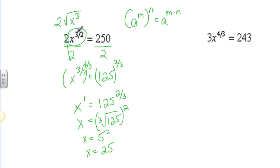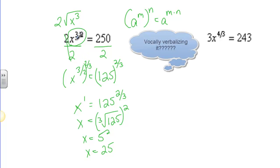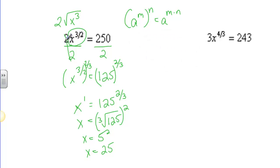I should plug it in and figure out what's going on. x to the 3 halves means the square root of 25 is 5, 5 cubed is 125, 125 times 2 is 250. So it works out and x equals 25 is our correct answer.